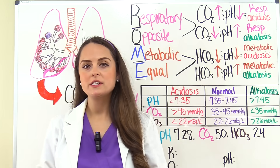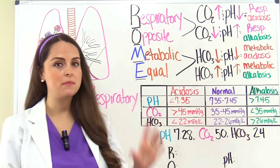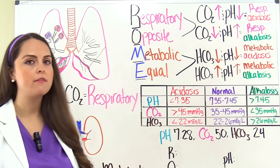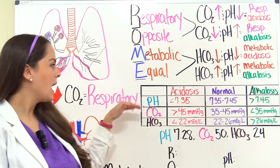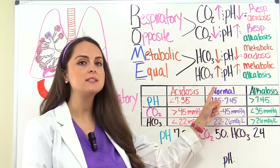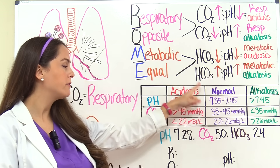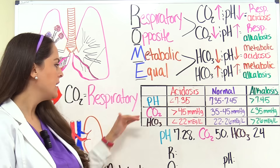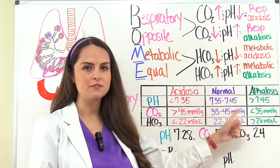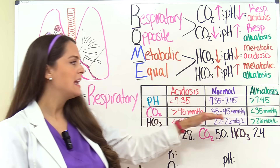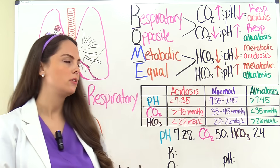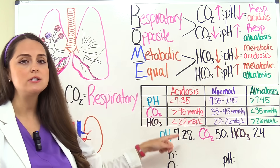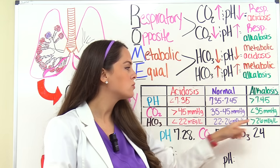Before you even try to solve an arterial blood gas problem, you have to have this table committed to memory, because you're going to pull from your memory bank these values and apply them to whatever method you're using. A normal blood pH is 7.35 to 7.45. Anything less than 7.35 is acidotic; anything greater than 7.45 is alkalotic. Normal CO2 is 35 to 45 — greater than 45 is acidotic, less than 35 is alkalotic. Normal HCO3 bicarb is 22 to 26 — less than 22 is acidotic, greater than 26 is alkalotic.